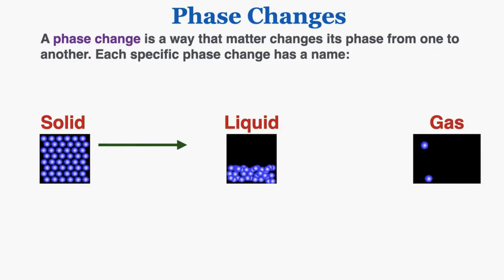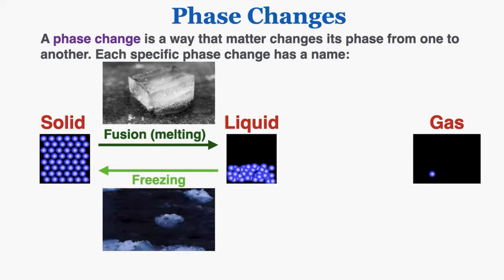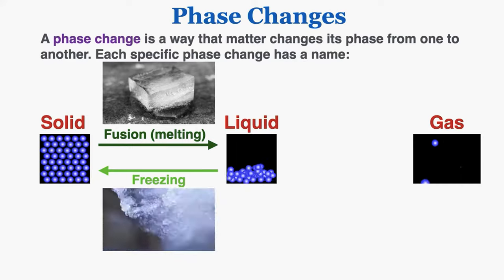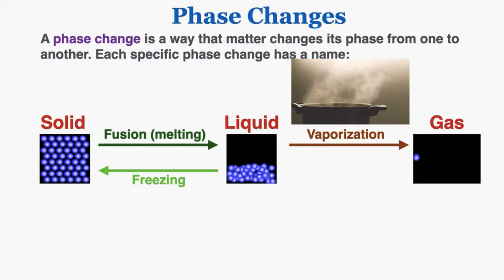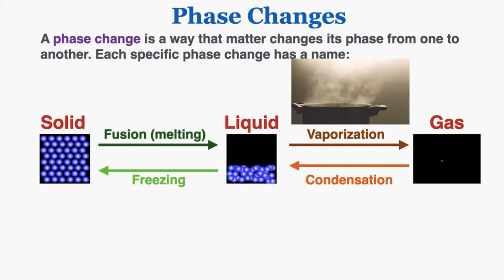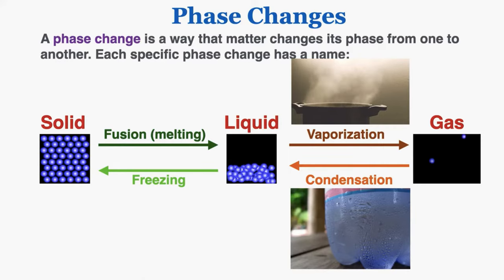Going from solid to liquid is called fusion — the more common name for that is just melting. Going from liquid back to solid is freezing. Going from liquid to gas we call vaporization, more commonly known as evaporation. Going from gas back to liquid is condensation. For example, if you've ever had a cold drink on a hot day, when gaseous water particles in the air impact your cold drink, the drink is cold enough to convert that gas back into a liquid, and the outside of your drink becomes wet.